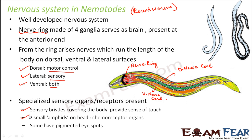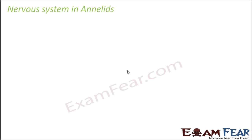The sensory bristles act as tangoreceptors. Nematodes also have two small amphids on the head which are chemoreceptor organs — small structures sensitive to chemicals. Some nematodes also have pigmented eye spots which are photoreceptors, though these are not present in all nematodes, only in some. Cephalization is evident here because the amphids, eye spots, and nerve ring are all concentrated towards one end of the body.